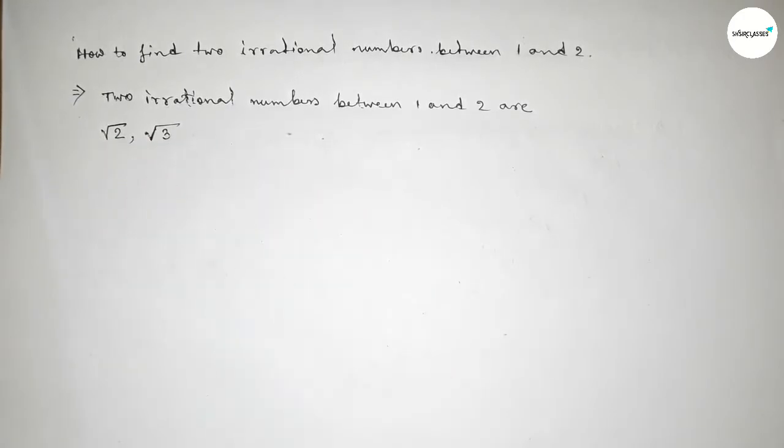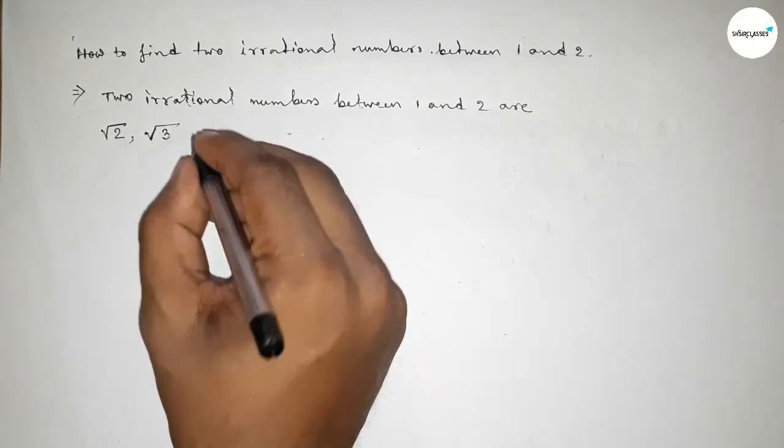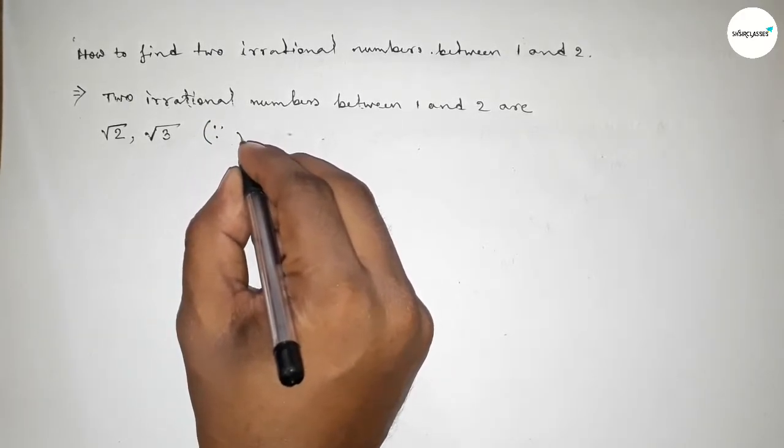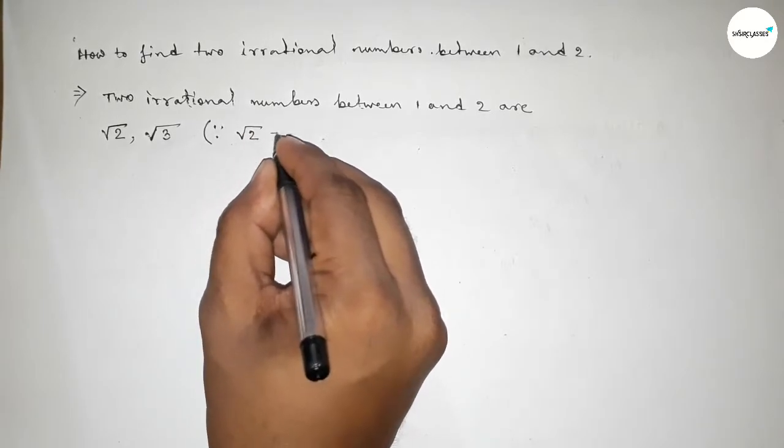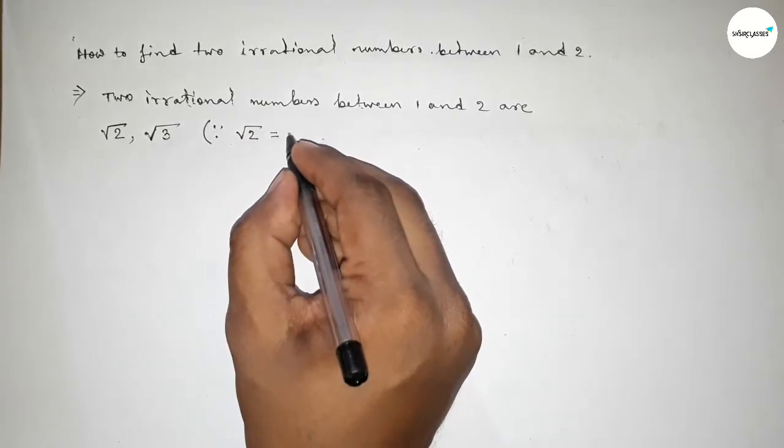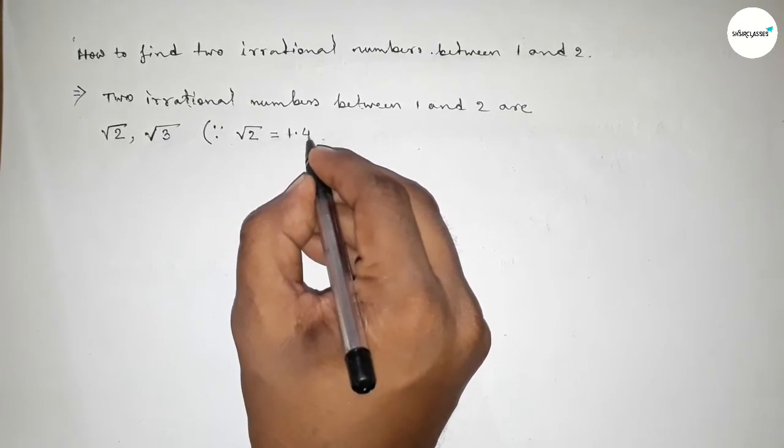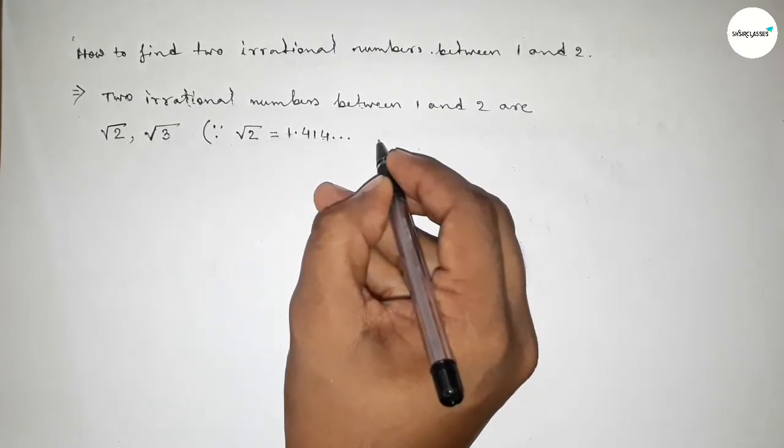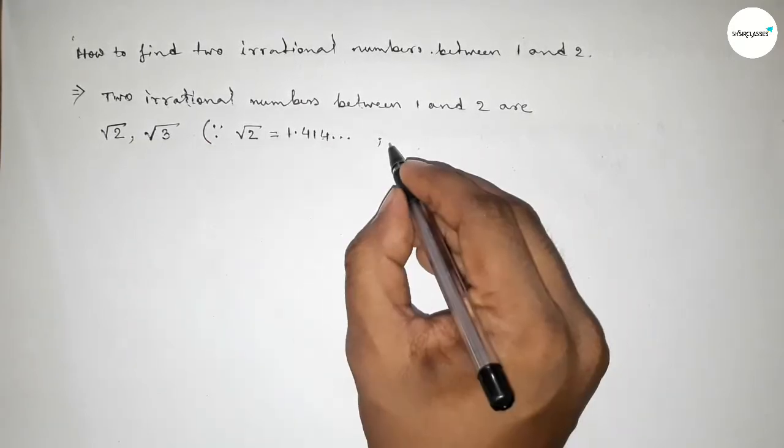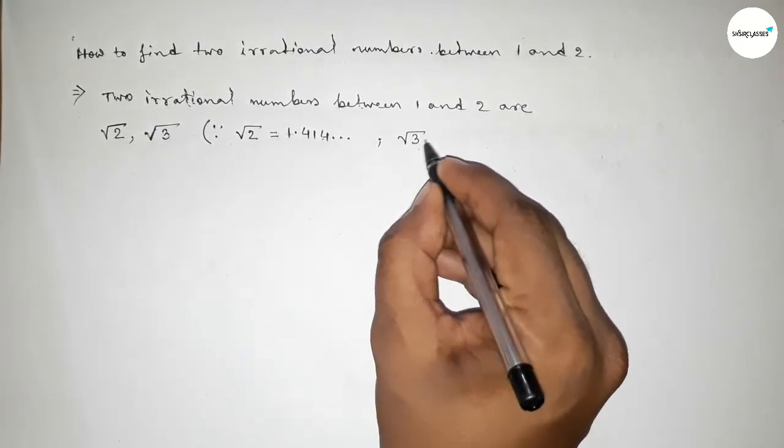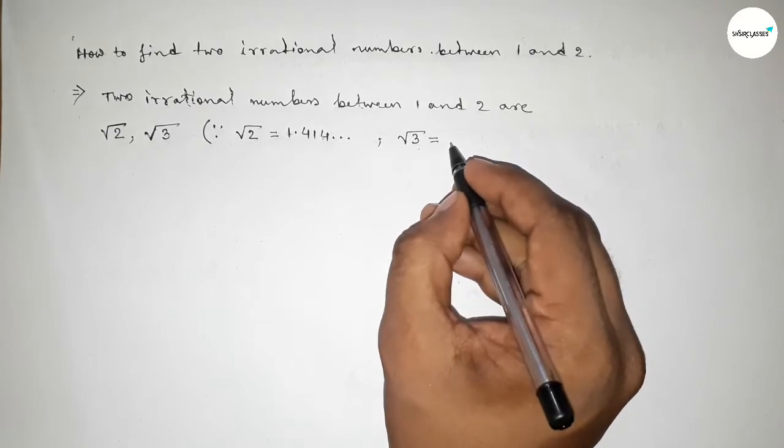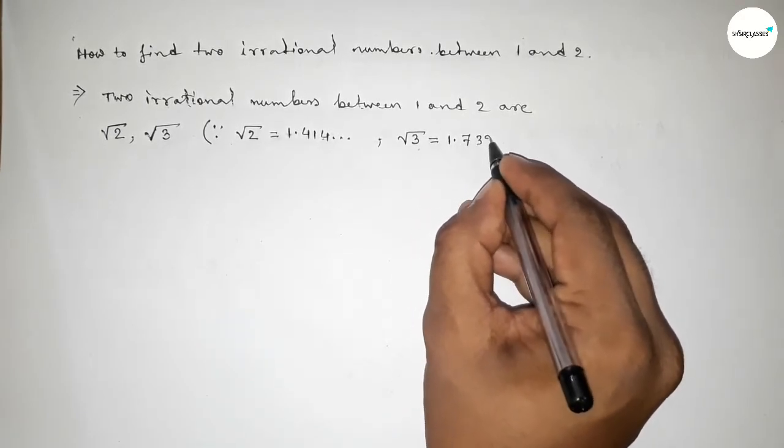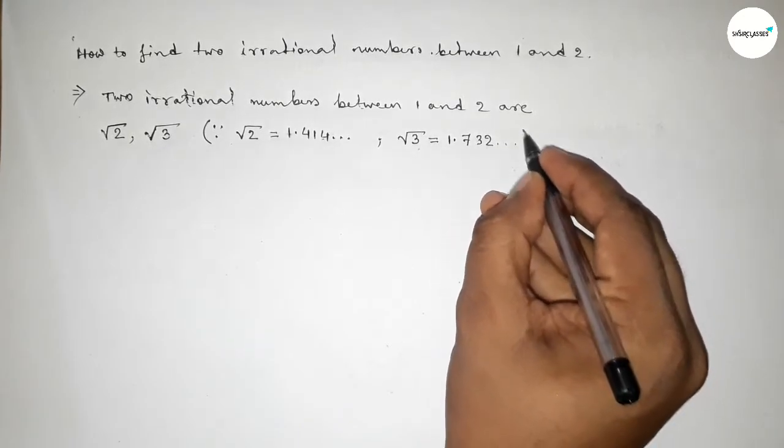...is √3. Since the value of √2 equals 1.414 and continuous, and the value of √3 equals 1.732 and continuous.